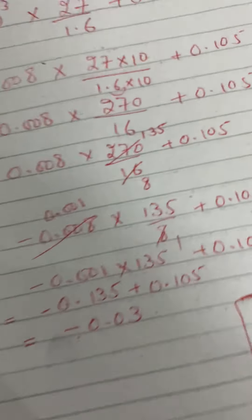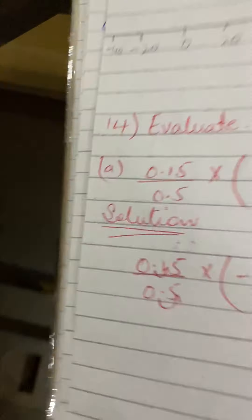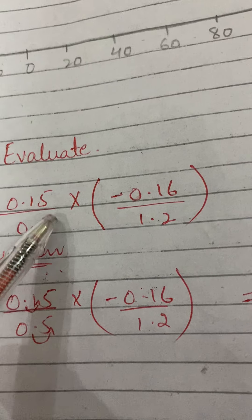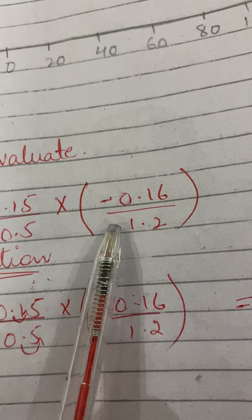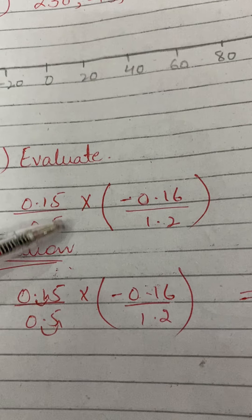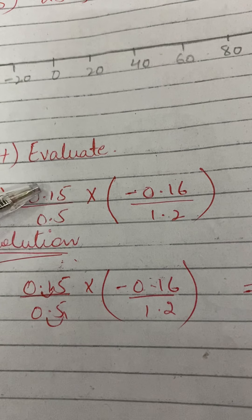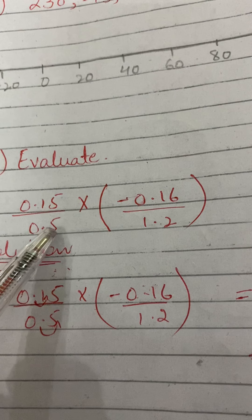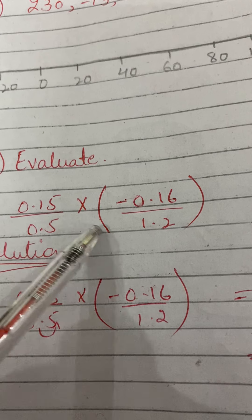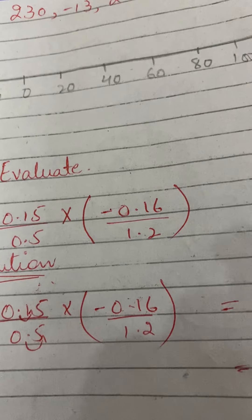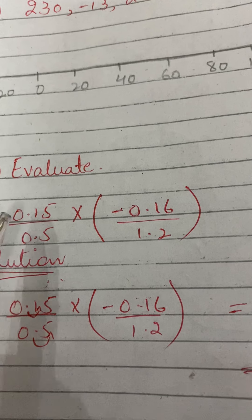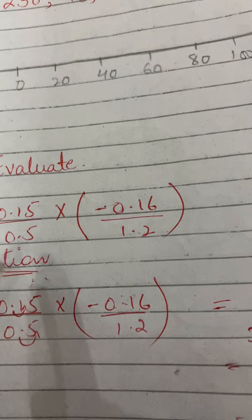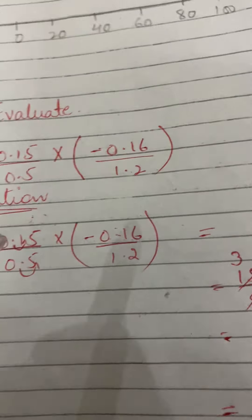Now come to part A. The expression is 0.15 over 0.5, multiplied by bracket minus 0.16 over 1.2. You can cut numbers vertically or by cross multiplication — when you join 0.5 with 0.16 and 0.15 with 1.2 it looks like a cross. You can simplify your numbers in this way.